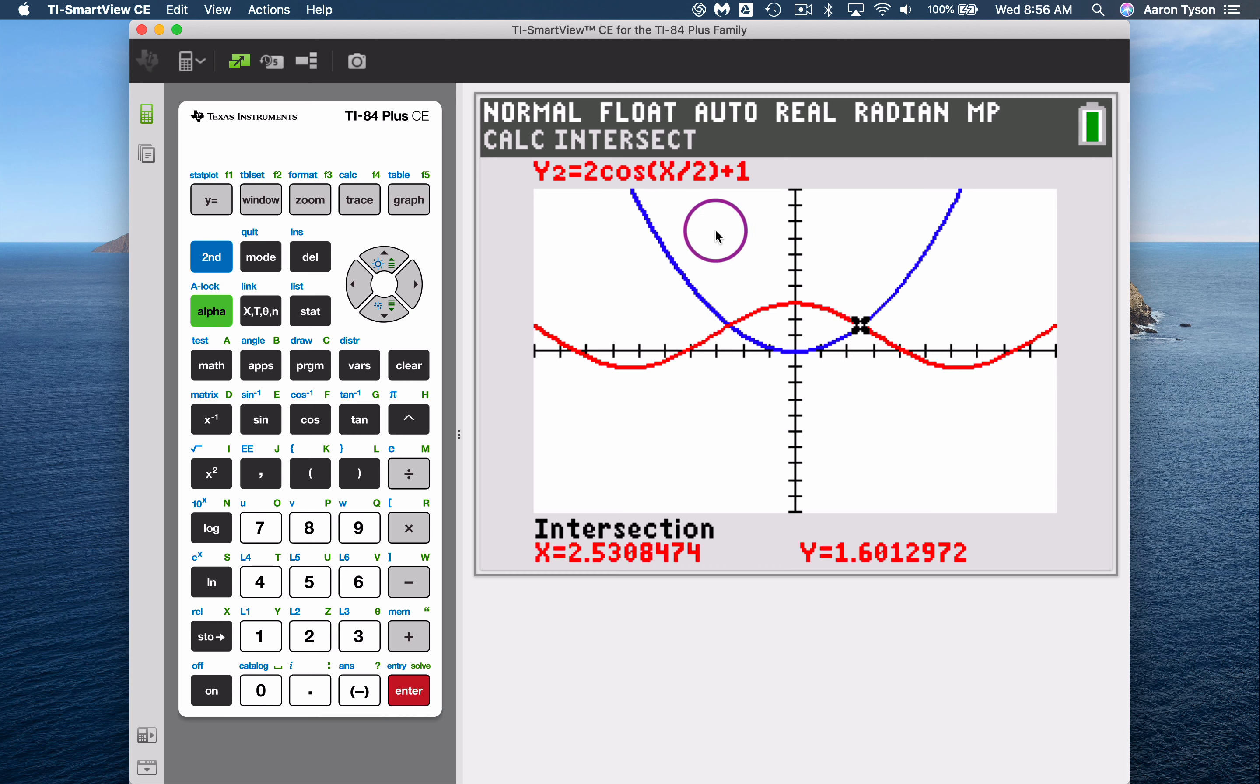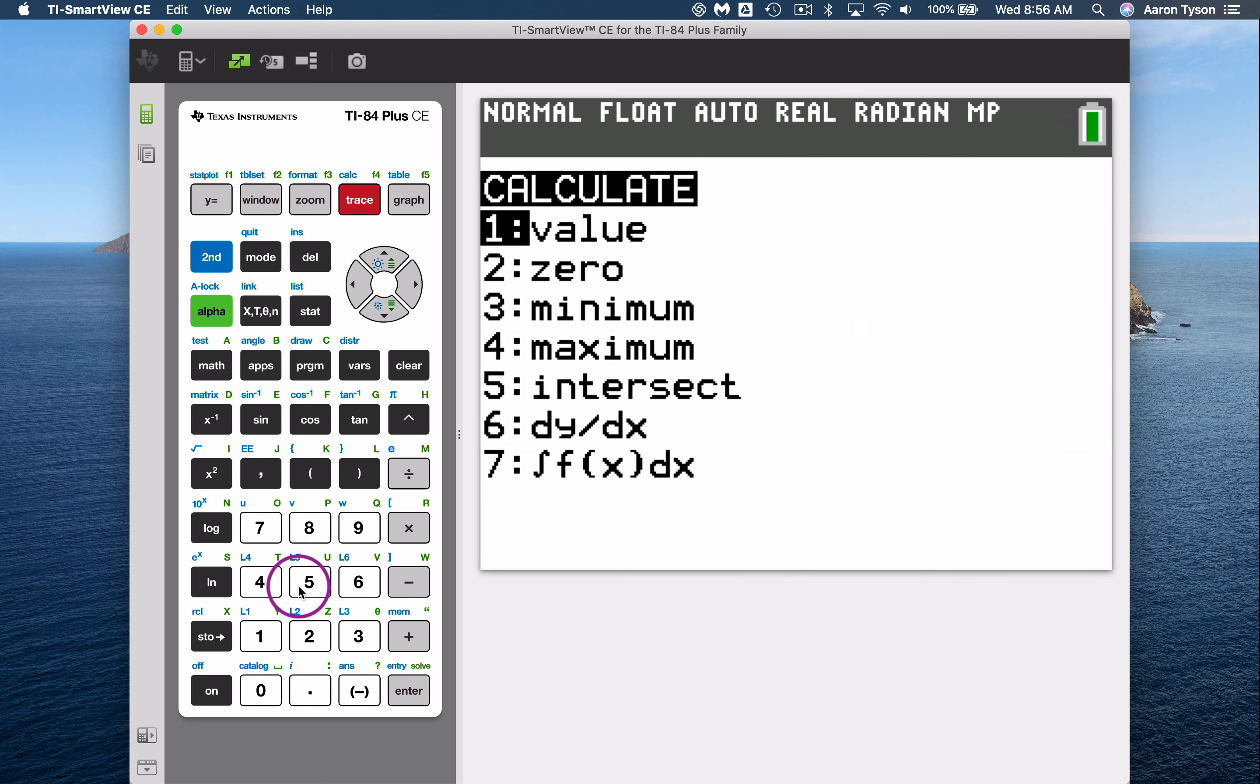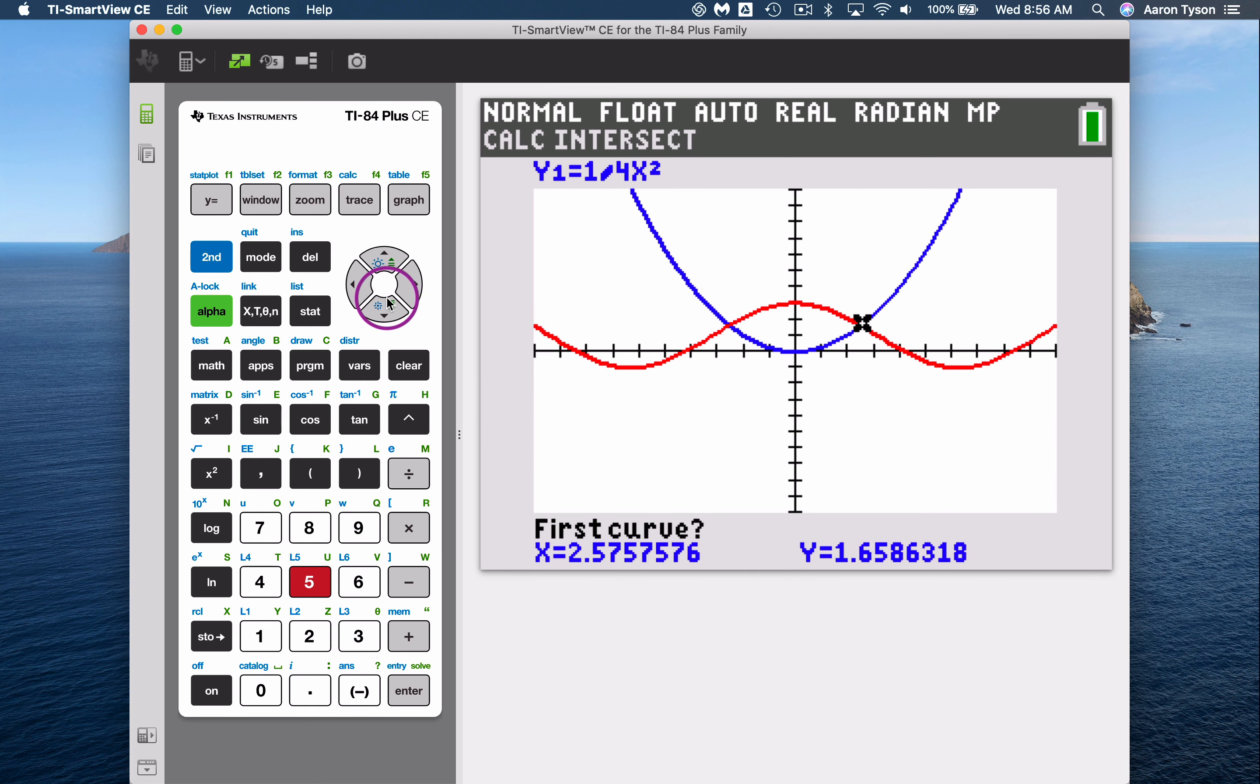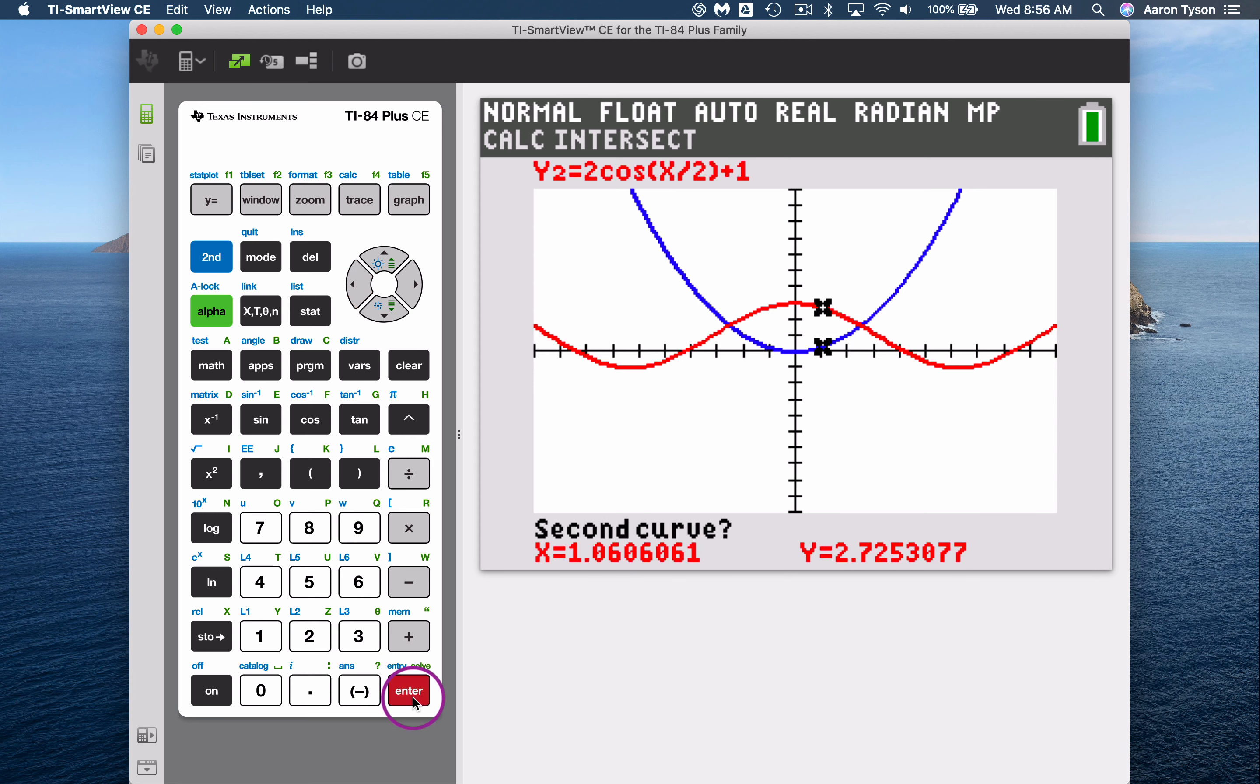And then you can do the exact same thing, go through that process again to calculate the other side. So second trace, choose option five for a point of intersection. First curve, second curve, and then if I want to calculate this point of intersection, I just move my cursor over here and hit enter.